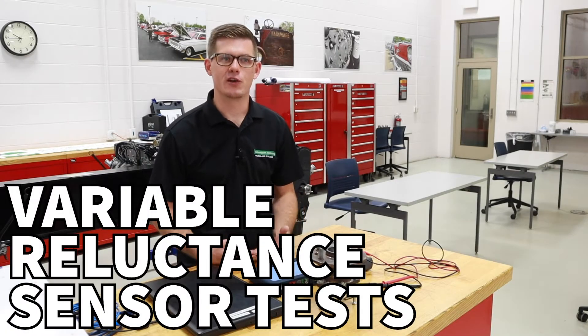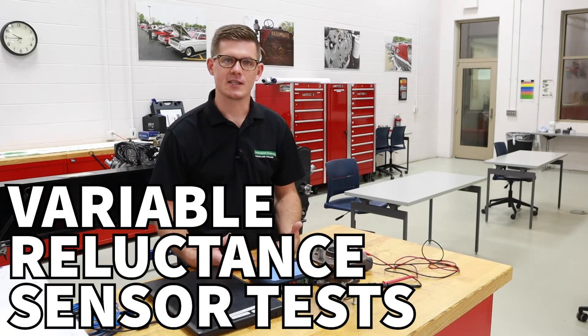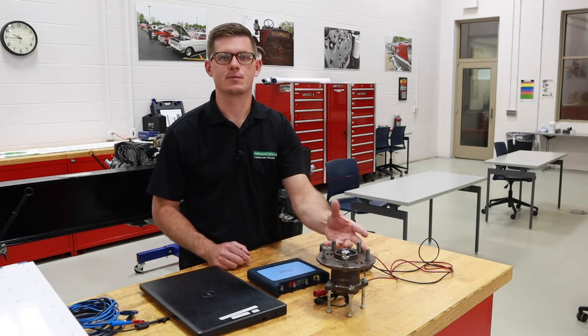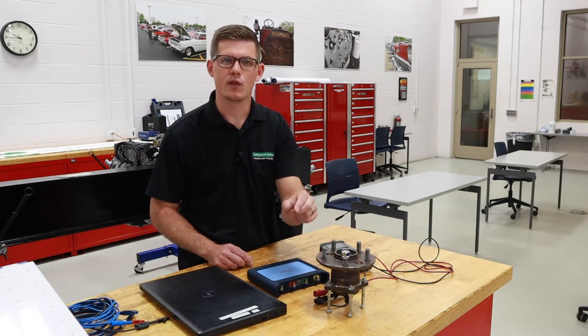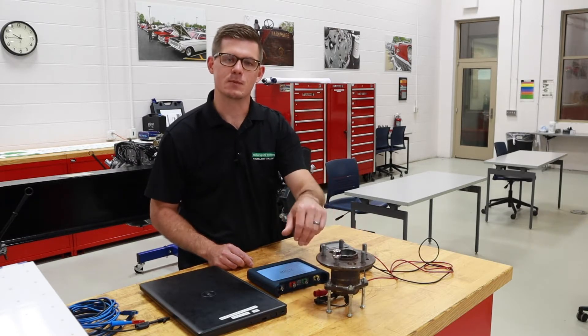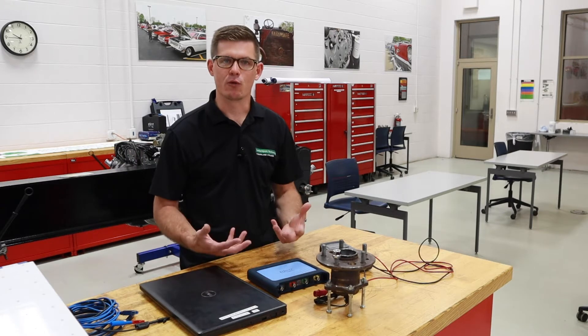In this video we're going to talk about how to measure an inductive or reluctance type sensor. So in this hub assembly we've got a reluctance or induction type sensor. It uses just two wires with a magnet and a coil and it looks at a reluctor ring that spins by in order to generate a voltage.